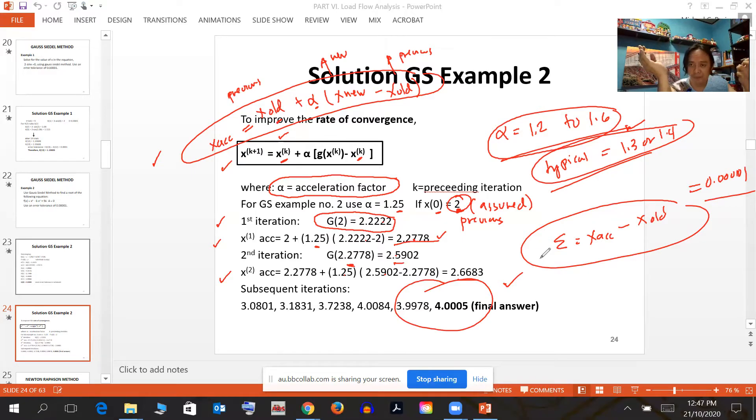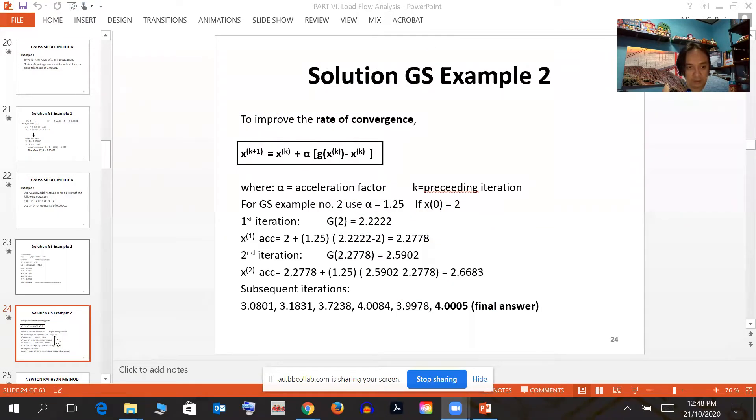If you want faster convergence, you can use a higher level up to 1.6, like 1.3, 1.35, 1.4—no problem. It's like a booster for the iteration to make it faster. But anyway, it will yield the same answer.